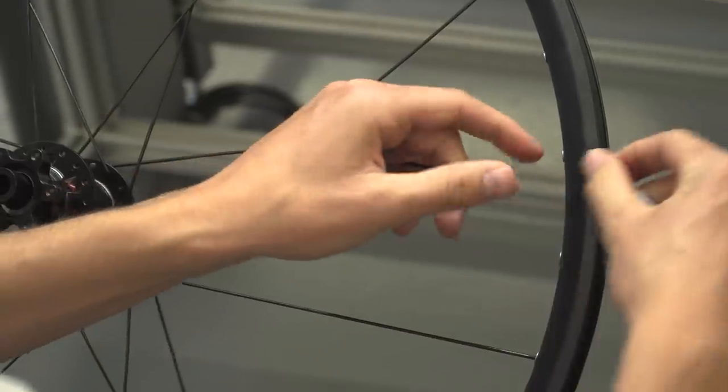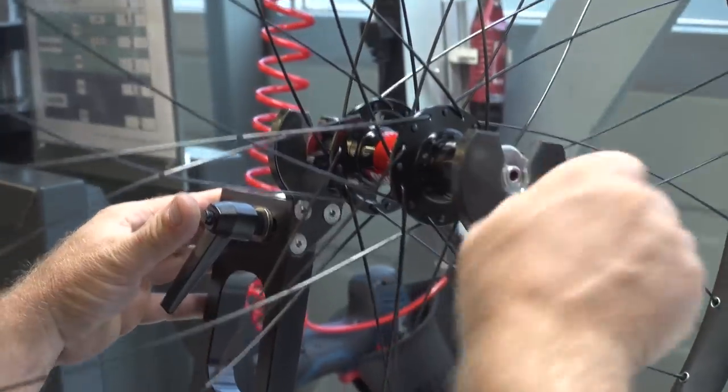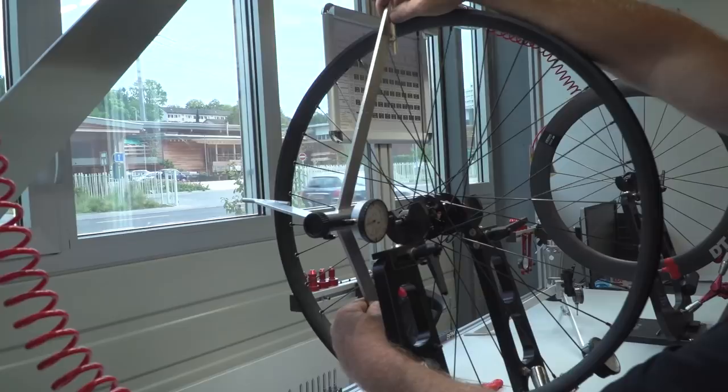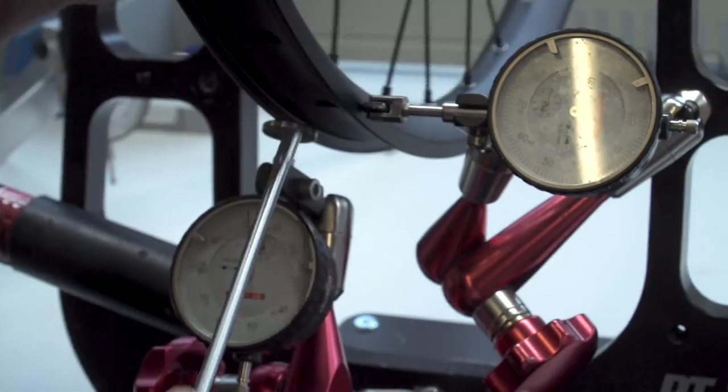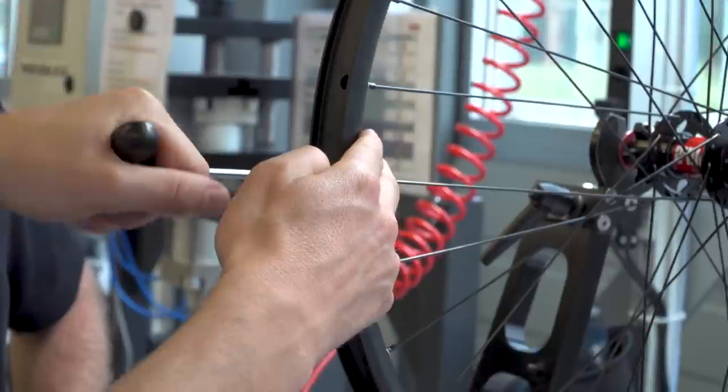We are lacing a traditional wheel with the common three-cross method, so-called because each spoke crosses three others. We'll lace it, pre-tension it, dish it, de-stress it, true it, and then tension it fully. First though, what do we actually need to build a wheel?